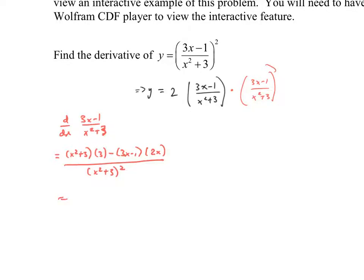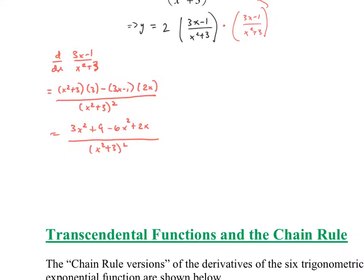Distributing the 3 gives 3x² + 9. Distributing the negative and the 2x: negative 2x times 3x is minus 6x², and negative 2x times negative 1 is positive 2x. All of this is over (x² + 3) squared. Simplifying: 3x² minus 6x² is negative 3x², then plus 2x, plus 9, all over (x² + 3) squared.